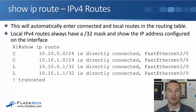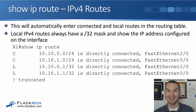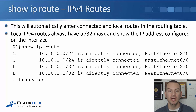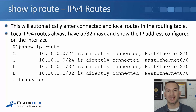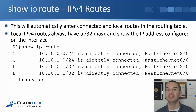When you configure IP addresses on interfaces, it will automatically enter connected and local routes for those interfaces into the routing table. We'll look at IPv4 first as a refresher and then compare with how things look in IPv6. Running 'show ip route' will show us the IPv4 routing table, and we can see entries that match the interfaces we just configured.